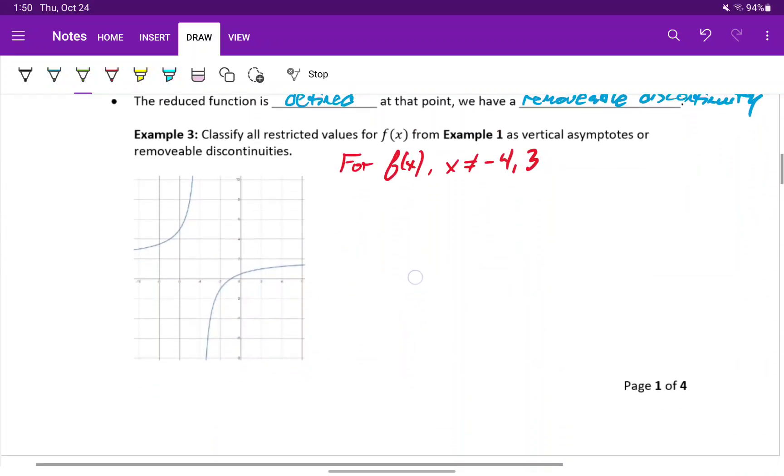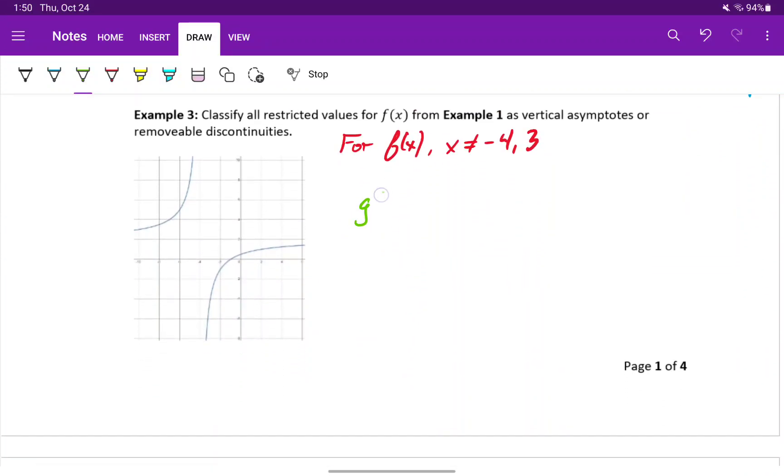Now we have our new function, g of x, which is just that reduced version of f of x. We can take that new denominator, set it equal to zero, which gives us a single restricted value that x cannot equal negative four.